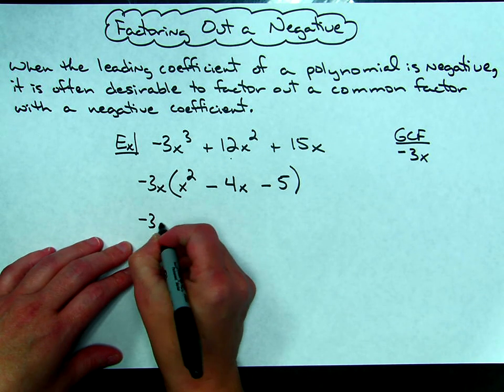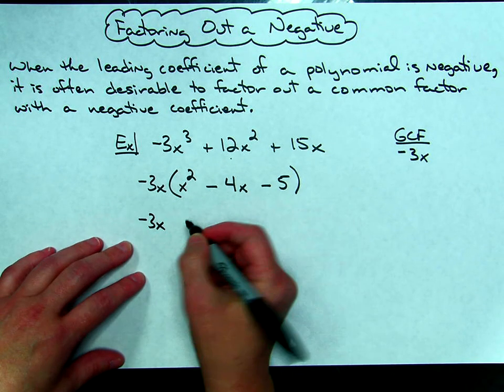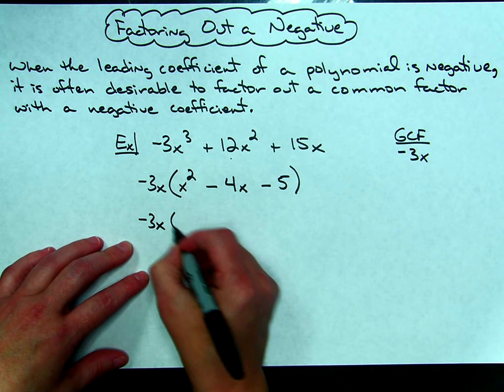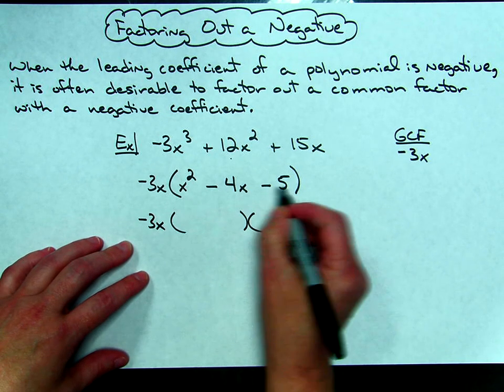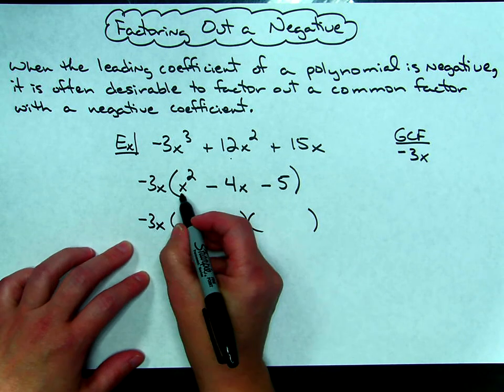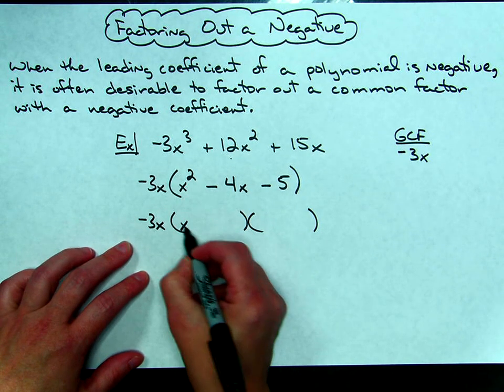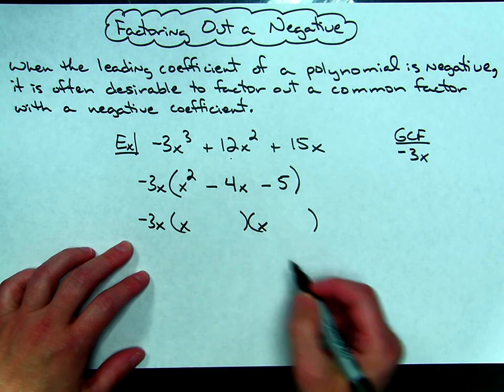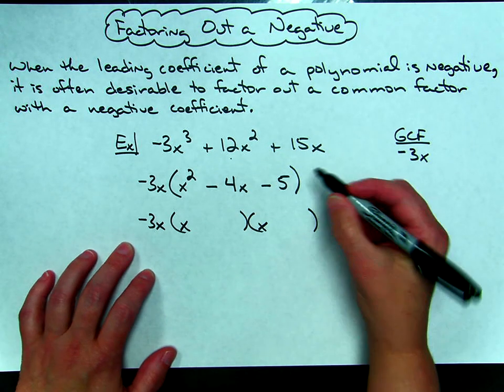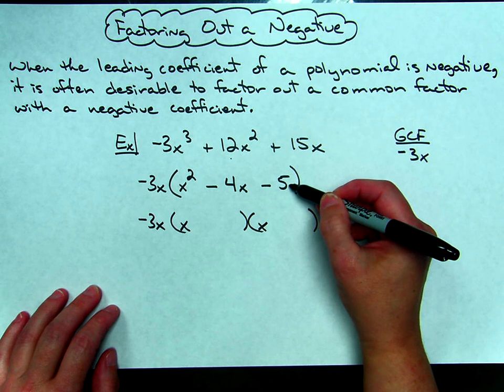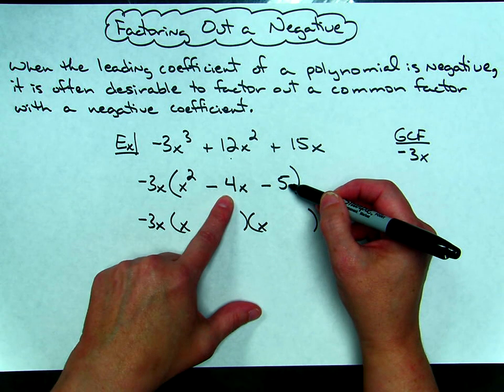Hopefully factoring the trinomial guess and check is something that you've already done, so it's not my intention of teaching that in this lesson. A trinomial will factor into two binomials, this one has a nice little leading coefficient of 1, so I just need an x and an x, because x times x is x squared. You're going to find, by guessing check, two numbers that multiply together to equal negative 5, but add to get negative 4.